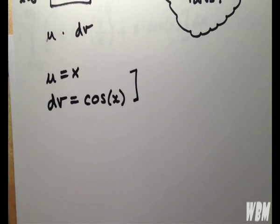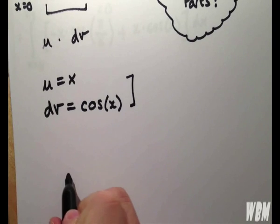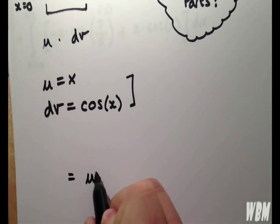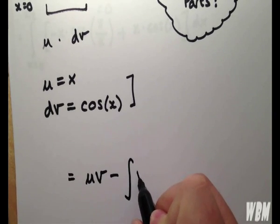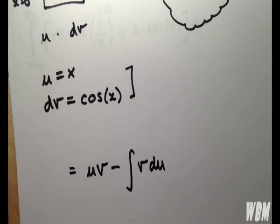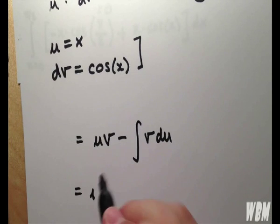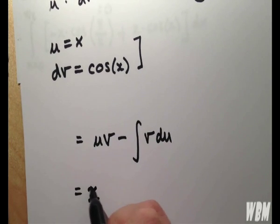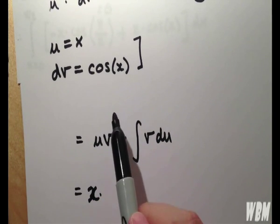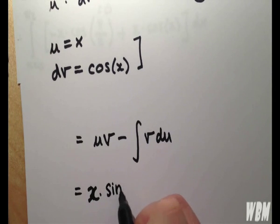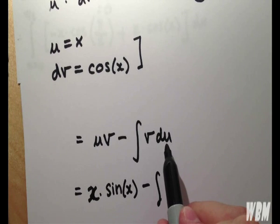Then we can continue to rewrite this in the integration by parts form, which is uv minus the integral of v du. So u is x, v is the integral of cos of x, which is of course sin of x, minus the integral of v du.